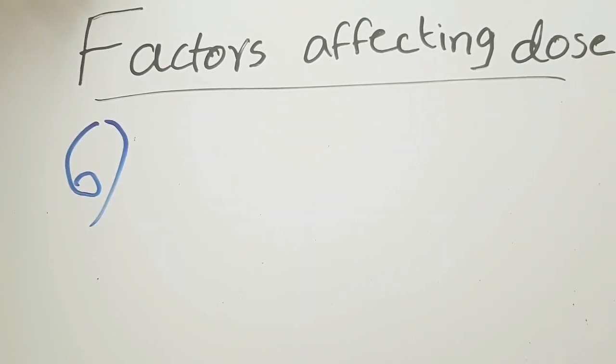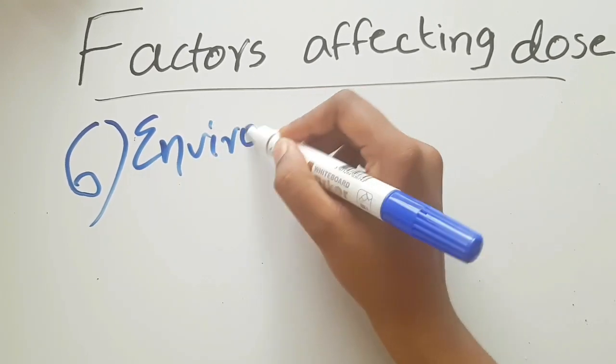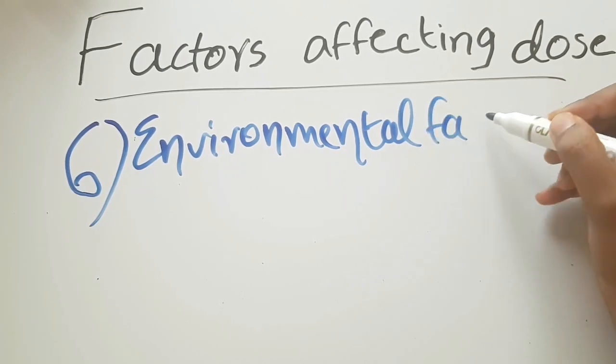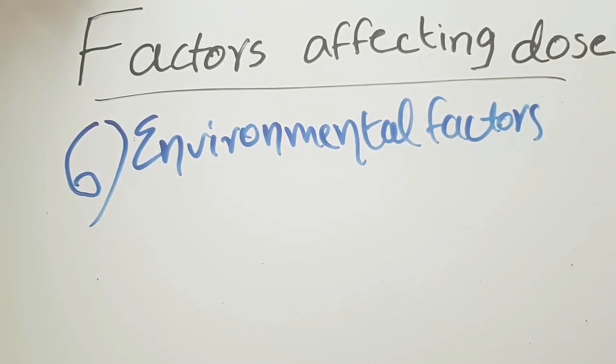The sixth factor is environmental factors. Stimulant types of drugs are taken at day time, and sedative type of drugs are taken at night. We know sedative drugs will induce sleep, so they will cause sedation-like feeling. The dose of a sedative required in day time will be much higher than at night. Another example: alcohol, that is better tolerated in winter than summer. There are different environmental factors which affect the dose of a drug.